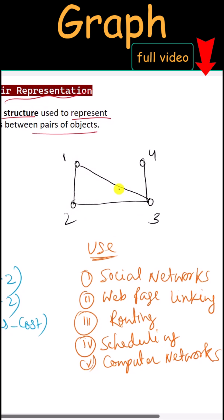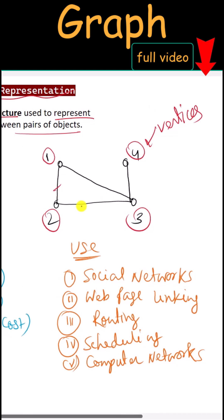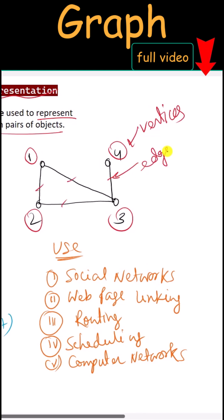For example, in this graph, 1, 2, 3, and 4 are all vertices, and the connections or links between the vertices are called edges.